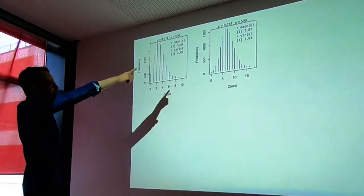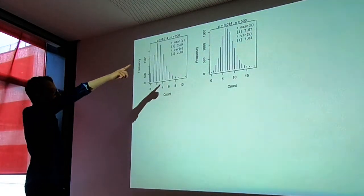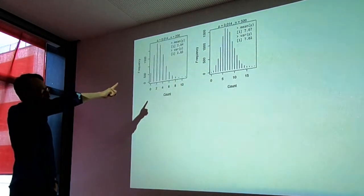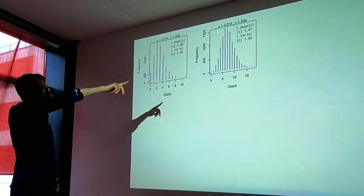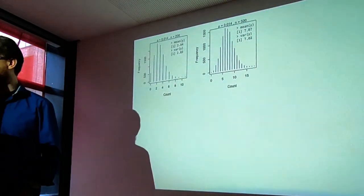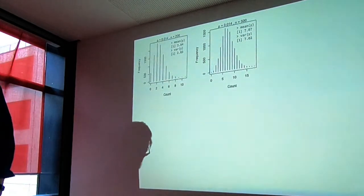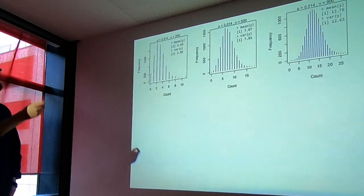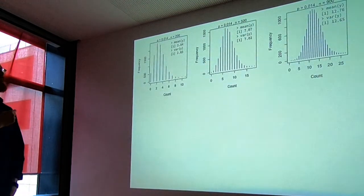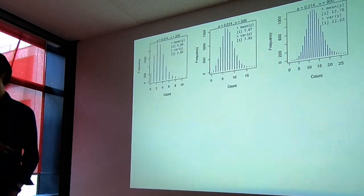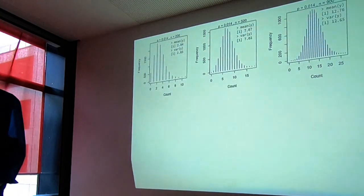What happens to the binomial distribution when the number of trials is really big and the probability of success on each trial is really small is that the mean and variance become the same. Here's another example with 500 trials — the mean shifts up to 7, and the variance is 7. With 900 trials, the mean goes up to almost 13 and the variance is 13 as well.